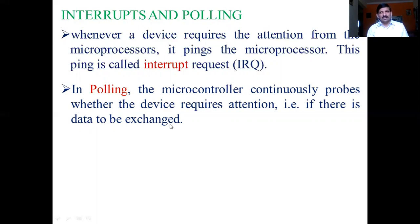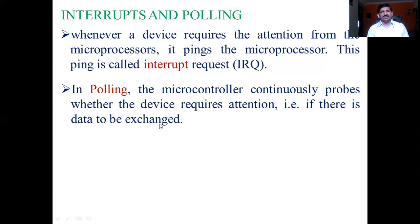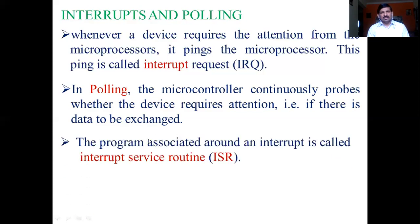Check the difference: imagine setting an alarm at 6 o'clock on your mobile versus checking the time every 5 seconds. That is the difference between interrupt and polling. The program associated with an interrupt is called an Interrupt Service Routine (ISR). After the interrupt occurs, the step-by-step procedure — the sequence of instructions to be executed — is defined in the ISR.